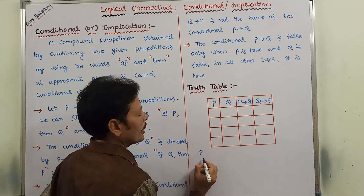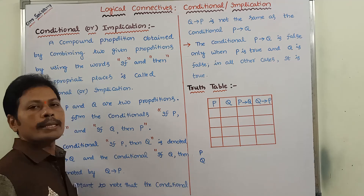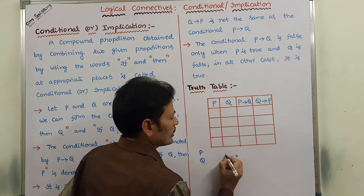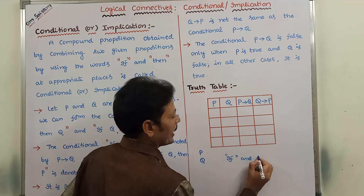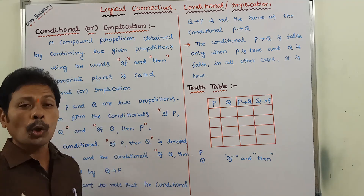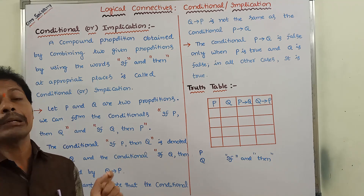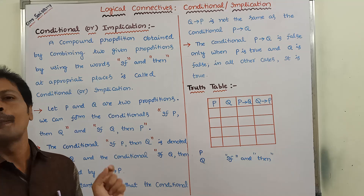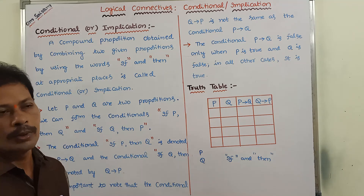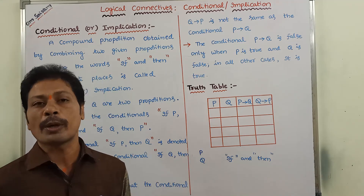Let us consider P and Q are two propositions. These two propositions are combined by using two words, that are IF and THEN. These two words can be inserted at appropriate places for combining these two propositions. Then we can call it as Conditional of P and Q, or Implication of P and Q. Now, how these two words can be used for combining these two propositions?